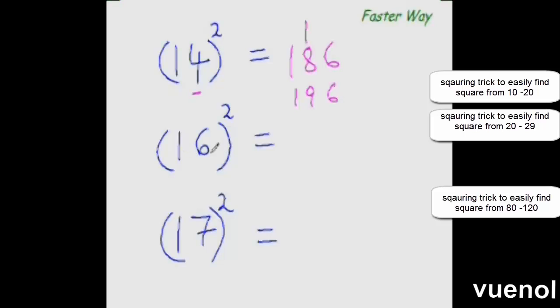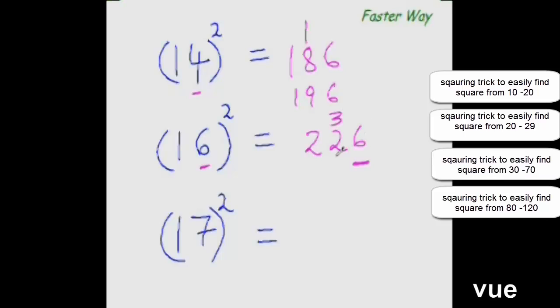Again, 16 square would be: add this units digit to the entire number. So 16 plus 6 is 22. One more digit to go here. So find the square of 6. 6 square is 36. So write 3 here, 6 here. 22 plus 3 is 25. So the answer is 256.